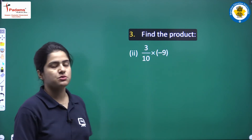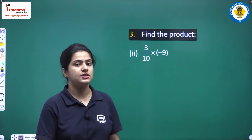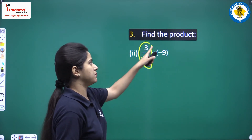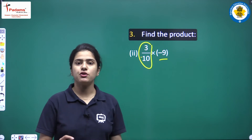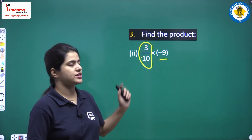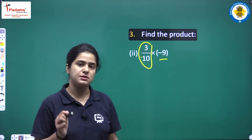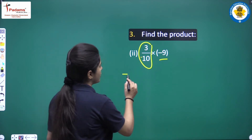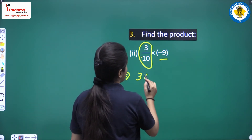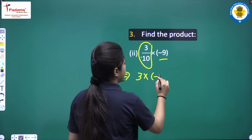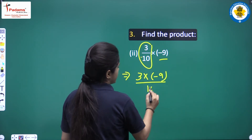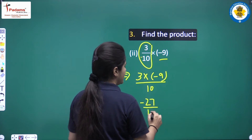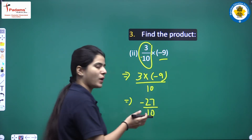Looking at the next question: 3 upon 10 into minus 9. Now, this is an integer. We have to multiply this rational number with this integer. You just multiply the numerator and the integer together, keeping the denominator the same. So, it is 3 into minus 9 upon 10. Students, 3 into minus 9 is minus 27 upon 10. This is the required result.